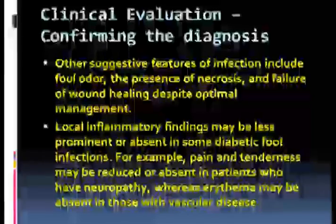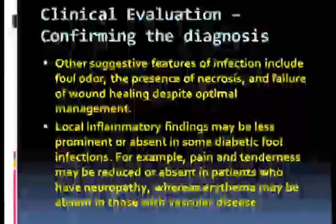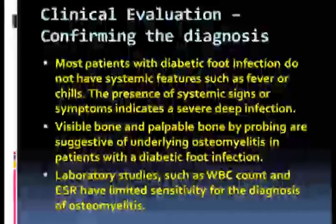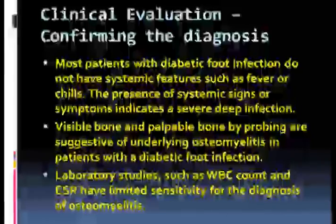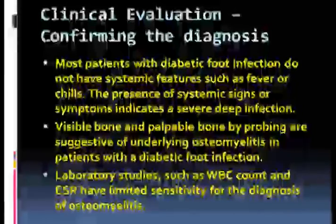Local inflammatory findings may be less prominent or absent in some diabetic foot infections. For example, pain and tenderness may be reduced or absent in patients who have neuropathy, whereas erythema may be absent in those with vascular disease. Most patients with diabetic foot infection do not have systemic features such as fever or chills. The presence of systemic signs or symptoms indicates a severe deep infection. Visible bone and palpable bone by probing are suggestive of underlying osteomyelitis. Laboratory studies such as WBC count and ESR have limited sensitivity for the diagnosis of osteomyelitis.